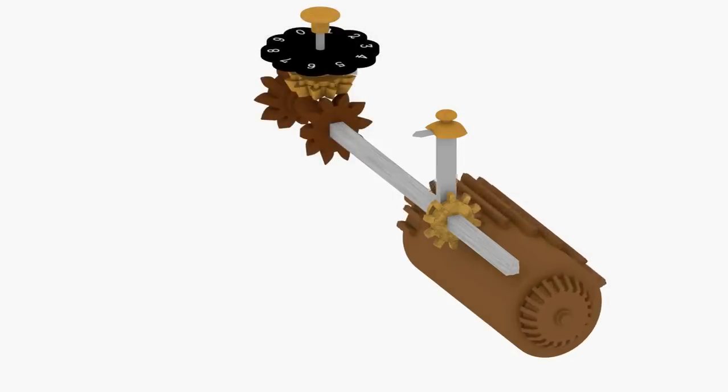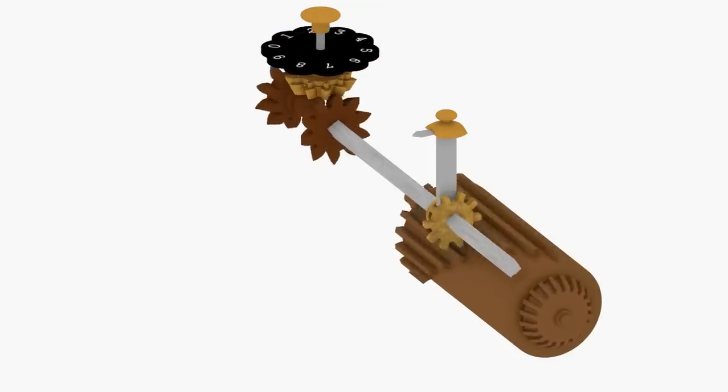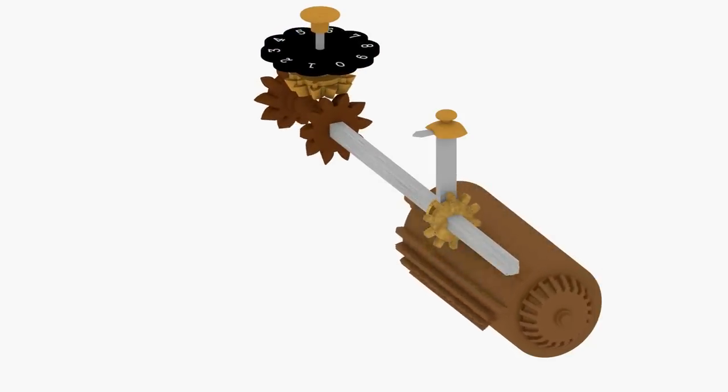Each time a cog meshes with the conductor gear, it rotates the accumulator dial by 36 degrees, an amount corresponding to one digit.